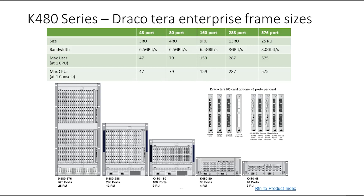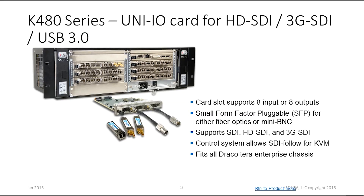The modules are eight ports per module, and they come in cat-x, fiber, XV fiber, or blanks for universal SFPs. The SSP card is available in fiber, mini-BNCs, or cat-x. The control system allows SDI follow for KVM as well.